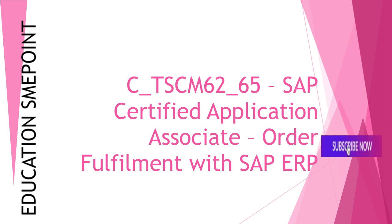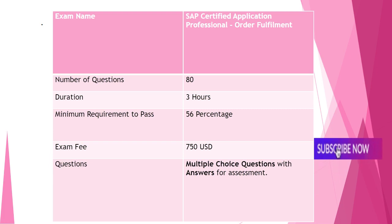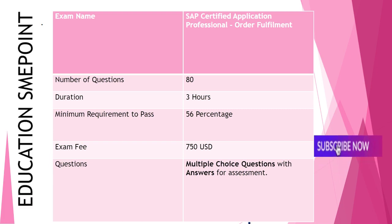Exam Process and Marks. Exam Name: SAP Certified Application Associate, Order Fulfillment. Number of Questions: 80. Duration: 3 hours. Minimum requirement to pass: 56%. Exam Fee: 750 US Dollars.